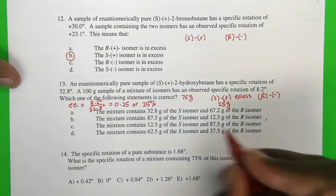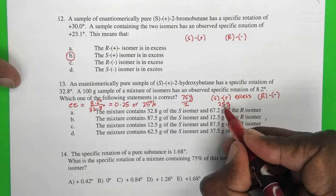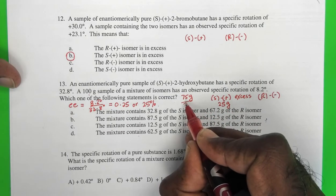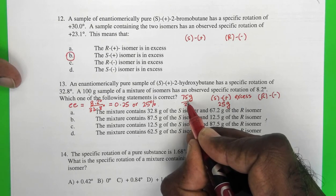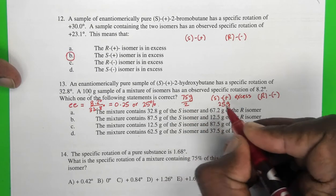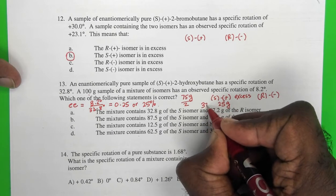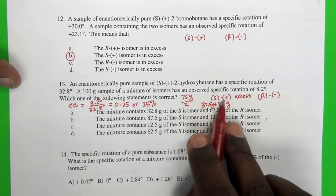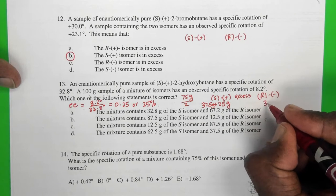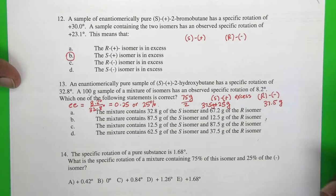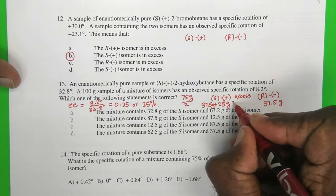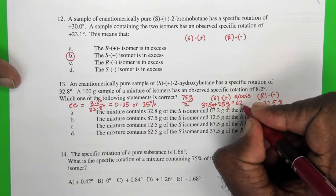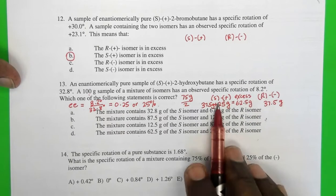So we get the total number of S(+). Therefore, half of that must be the S isomer. So 75 divided by 2 is 37.5 grams, which must be added to this 25 grams. So we get the total number of S(+), and the R(-) isomer just has 37.5 grams. So if I add these two up, I end up with 62.5 grams of S(+) isomer and 37.5 grams of R(-) isomer.